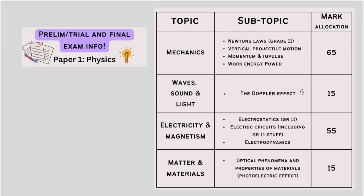This is the breakdown of topics for your physics paper. Out of 150 marks, 65 marks will come from mechanics, covering those specific sections. Wave, sound and light will be about 15 marks — that is the Doppler effect. Then you've got 55 marks for electricity and magnetism: circuits, electrodynamics, motors and generators, and electrostatics. Matter and materials — the photoelectric effect — counts around 15 marks. These are approximate marks, so for example the Doppler effect might be 13 instead of 15, but it's around this allocation.